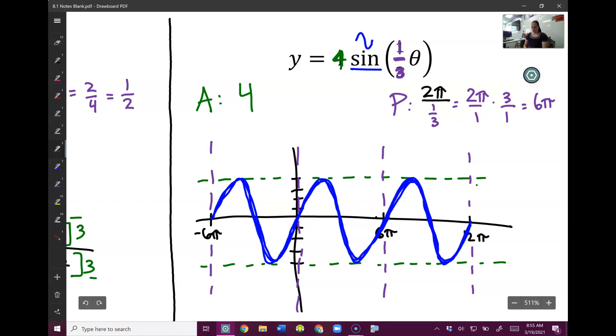So for the amplitude, I go up 4, down 4. Make my amplitude lines. My period should all be 6π apart. So I got 6π, 12π, and then I also got 1 to the left, negative 6π. So that gives me my boxes.